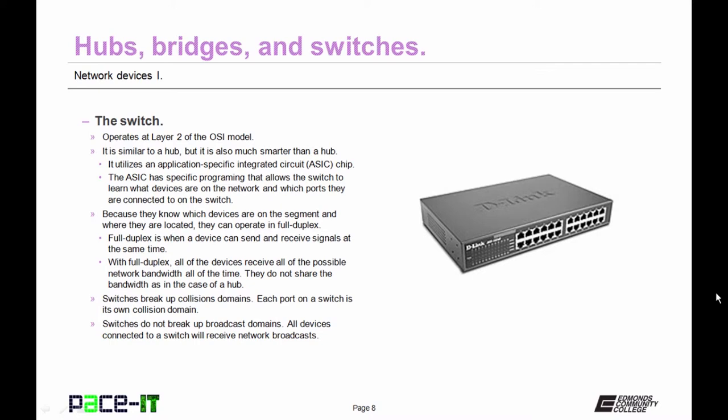Devices connected to a switch do not share the bandwidth as in the case of a hub. Switches break up collision domains on each of their ports, so each port on a switch is its own collision domain — there are no collisions in a switched network. However, switches do not break up broadcast domains. All devices connected to a switch will receive network broadcasts.